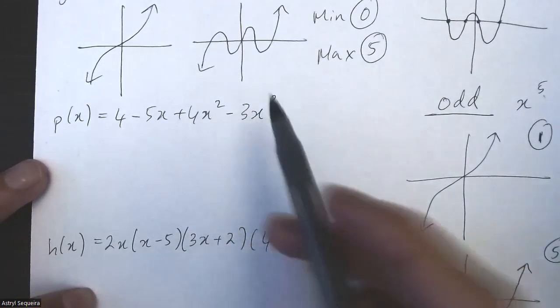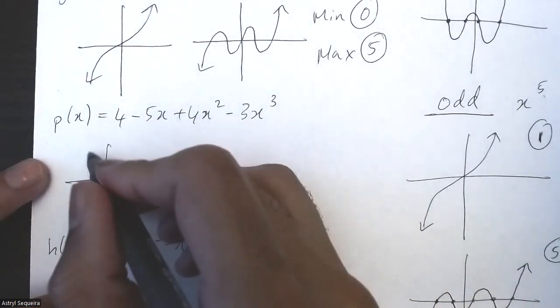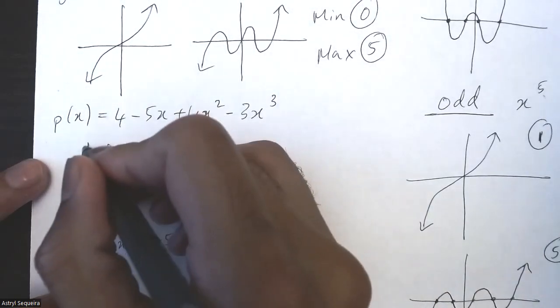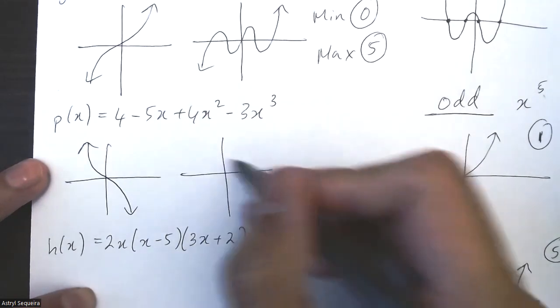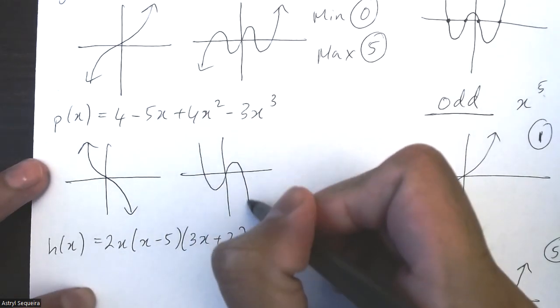This one has a degree of three. It's a negative function. So minimum number of zeros again is one, and maximum will be three.